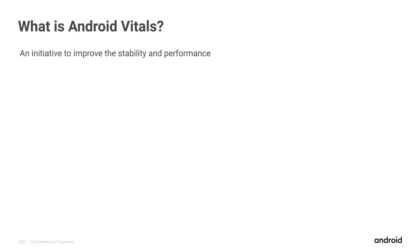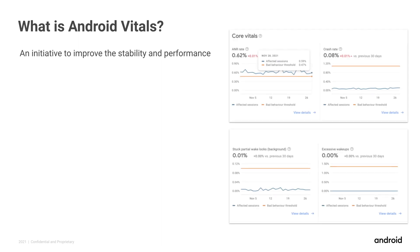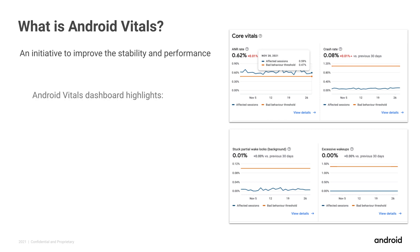Android vitals is an initiative by Google to improve the stability and performance of Android apps and devices. When an opt-in user runs your app, their Android device collects various metrics. The Google Play Console aggregates this data and displays it in the Android vitals dashboard. The dashboard highlights crash rate, ANR rate, stuck wakelocks, and excessive wake-ups — these are the core vitals developers should pay attention to.